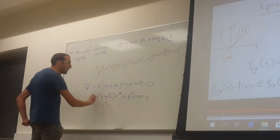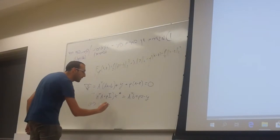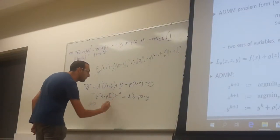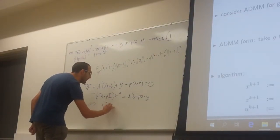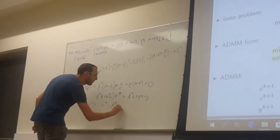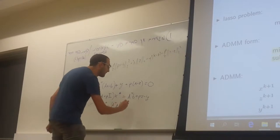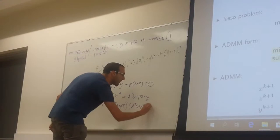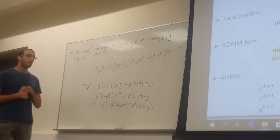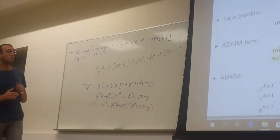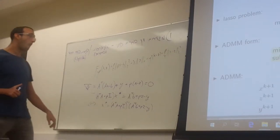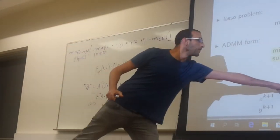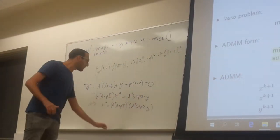If we assume that this part is invertible, we have X star is A transpose A plus rho I inverse multiplied by A transpose B plus rho Z minus Y. Just check yourself. I have slides from Steven Boyd's review paper. Is that what you got? Yes.